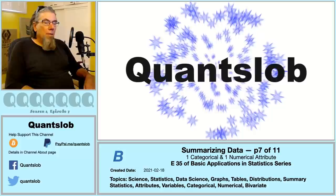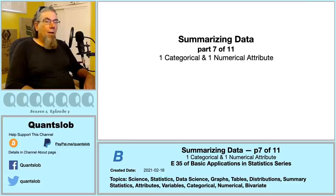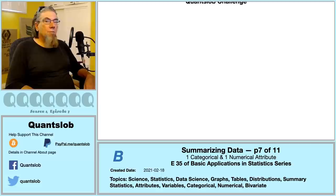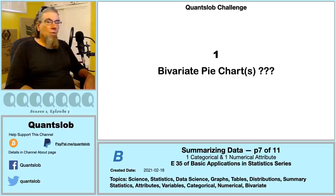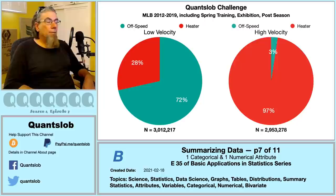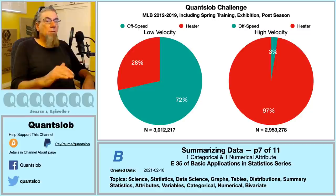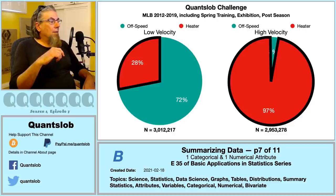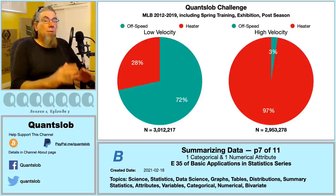Greetings and welcome to another installment of QuantSlob — this is episode 35, part seven of our summarizing data series. Let's take a look at our previous challenge: how might we use pie charts to show a bivariate distribution between two categorical attributes? We can use side-by-side pie charts. The chart on the left shows the distribution of off-speed or heater for pitches categorized as low velocity; the chart on the right shows the same distribution for high-velocity pitches. This sort of works — we can see that heaters are much more prevalent among high-velocity pitches than low-velocity pitches. There's something really important happening here.